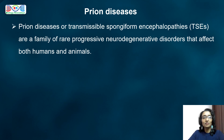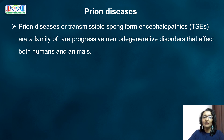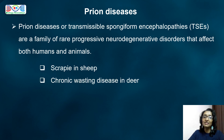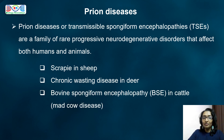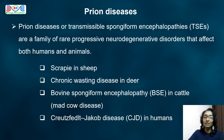Prion diseases, or transmissible spongiform encephalopathies, are a family of rare progressive neurodegenerative disorders that affect both humans and animals. Some of them include Scrapie in sheep, chronic wasting disease in deer — which gets its name from the drastic weight loss observed in infected animals — bovine spongiform encephalopathy in cattle, commonly known as mad cow disease, and its analogous variant, Creutzfeldt-Jakob disease in humans.